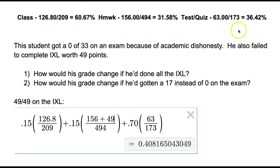So here is a student who's badly failing the class, and these are their proportions. They got a 0 out of 33 on an exam because of academic dishonesty, and they also failed to do a lot of IXL. You might wonder how the grade would change if they'd done the IXL or if they got at least 50%, a little over 50% on the exam instead of a 0.